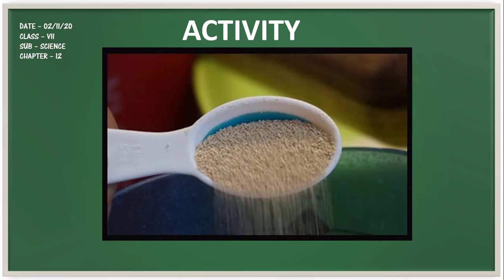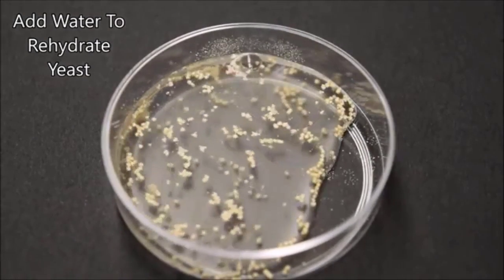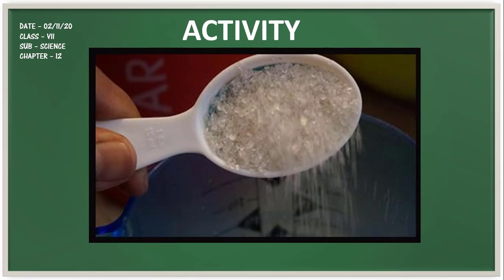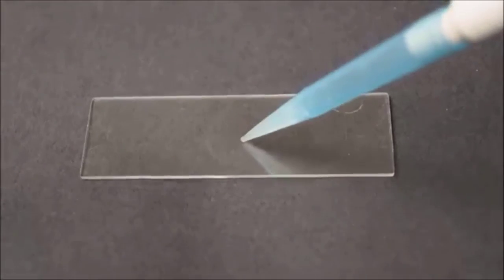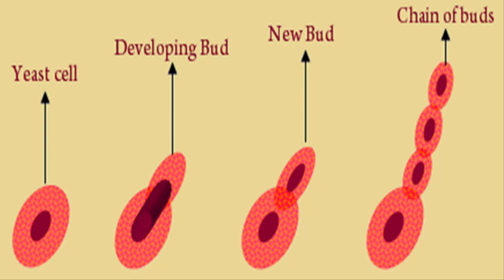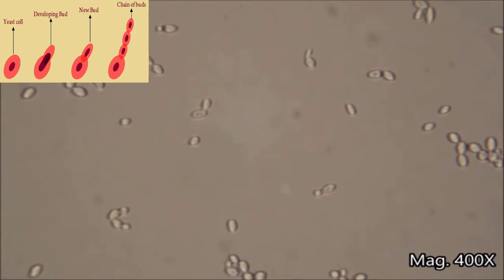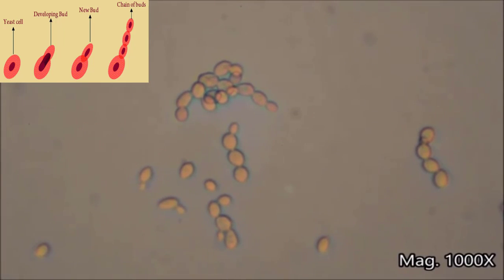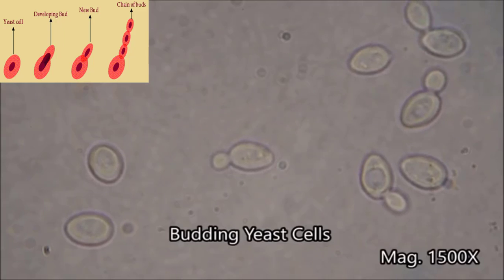To understand budding, let's look at activity 12.3. Take a small amount of yeast powder in a container, add water and a spoonful of sugar, shake to dissolve, and keep it in a warm part of the room. After an hour, put a drop of this liquid on a glass slide and observe under the microscope. You may see the formation of new yeast cells — small bulb-like buds gradually grow and detach from the parent cell, forming new yeast cells that mature and produce more yeast cells.